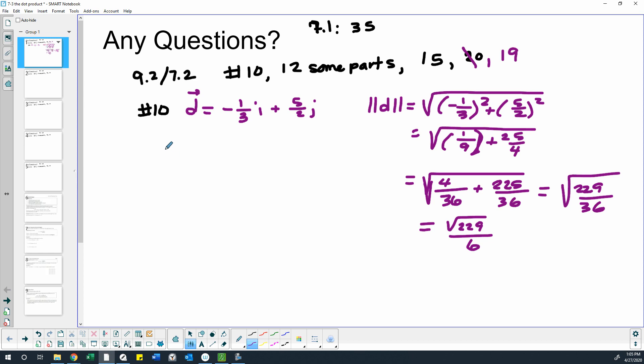Okay. So now to find the unit vector, we take this vector and we just divide by the magnitude. And that will change the magnitude of this to 1, instead of to this weird square root 229 over 6. So we're going to divide this by square root 229 over 6.